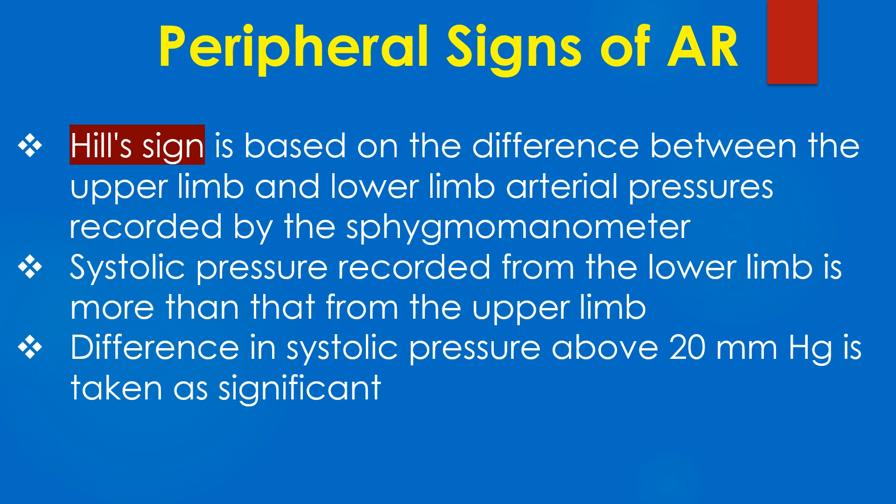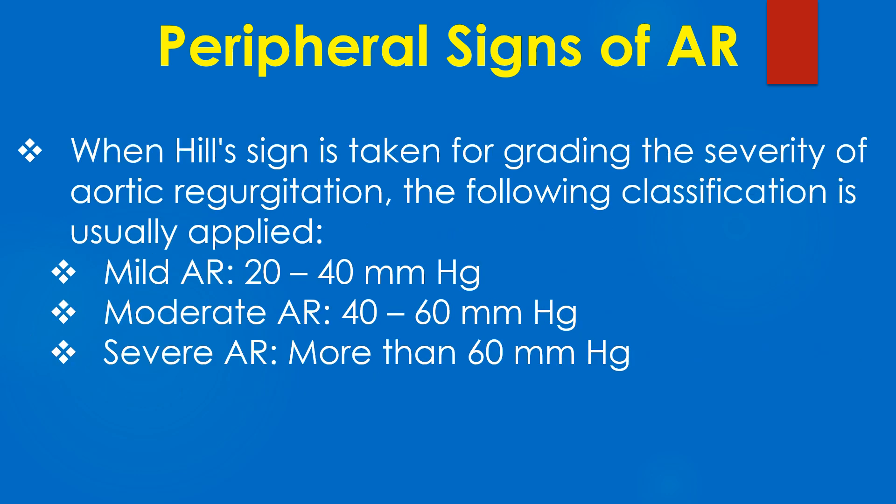Hill sign is based on the difference between upper limb and lower limb arterial pressures recorded by sphygmomanometer. Systolic pressure recorded from the lower limb is more than that of the upper limb, and a difference above 20 mmHg is considered significant. For grading severity: mild AR is 20–40 mmHg, moderate AR is 40–60 mmHg, and severe AR is more than 60 mmHg.